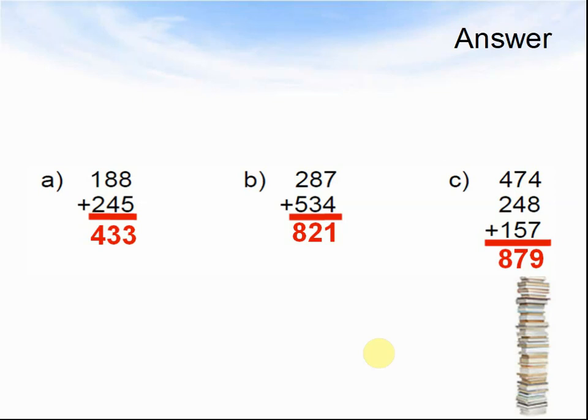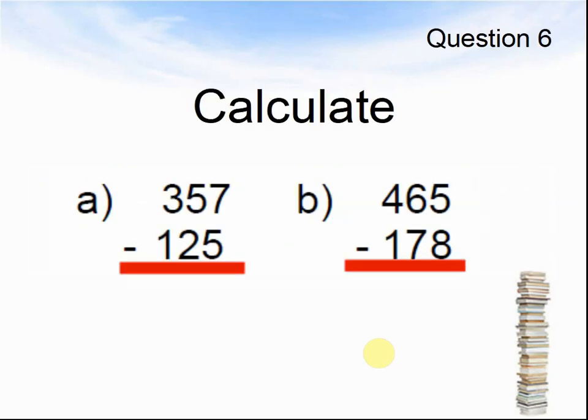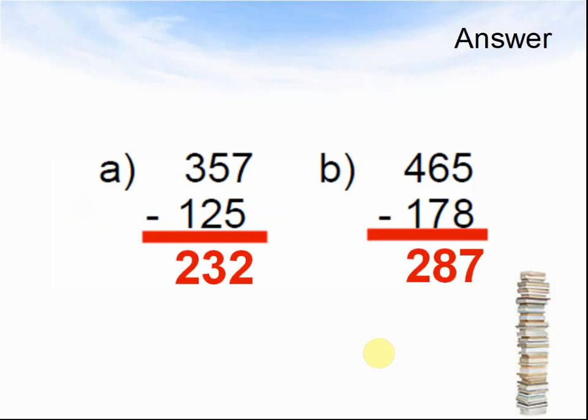Let's look at the next question. Question 6. Calculate. A. 357 take away 125. B. 465 take away 178. Pause the video until you are ready to see the answer. Here comes the answer. Answer A: 357 minus 125 equals 232. And B: 465 minus 178 equals 287.